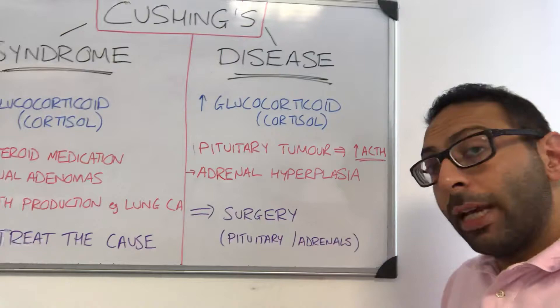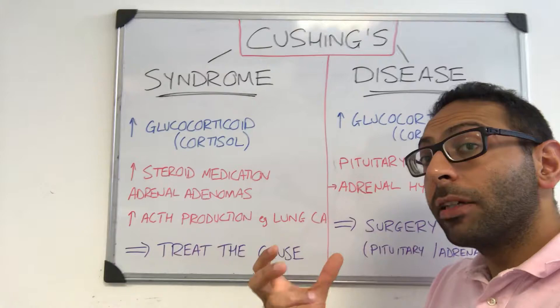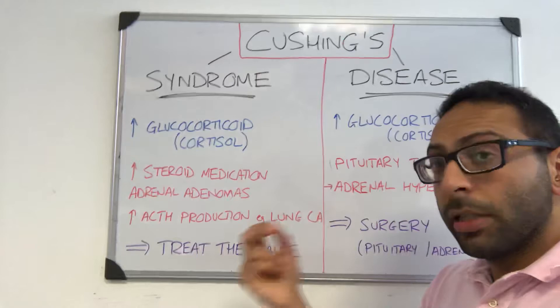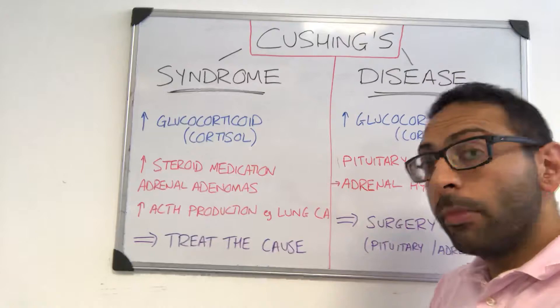Cushing's syndrome is pretty much any other reason why you end up with increased levels of glucocorticoid in the body. It could be because someone's taking too much steroid medication or has been on it for too long. It could also be because someone has adenomas on the adrenal glands — nothing to do with the pituitary, just adenomas on the adrenal glands.